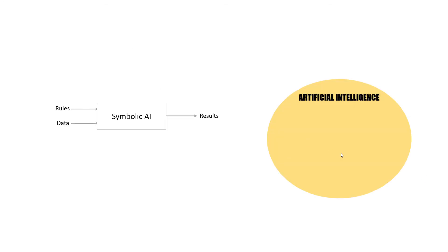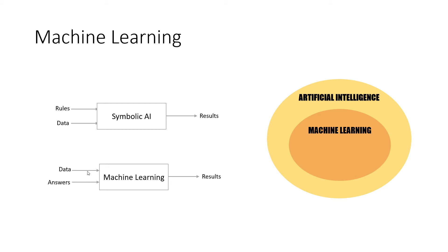One way we can define symbolic AI is through a simple representation: in symbolic AI you have the data and also the programmed set of rules, so the system takes the rules and data from the programmer and uses those rules to create results. Whereas in machine learning, both the data and the answers are given to the system, and based on the association between data and answers, the rules are discovered by the computer rather than being programmed in. Once the rules are discovered, the results are created.